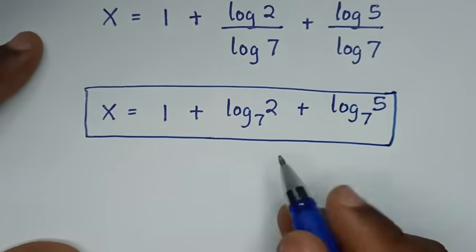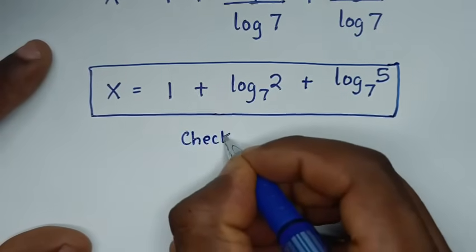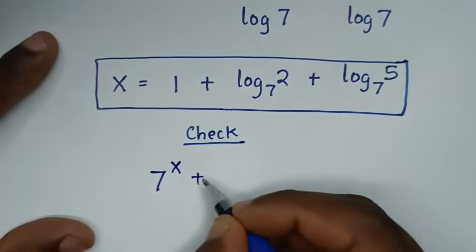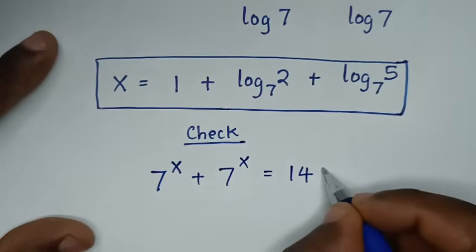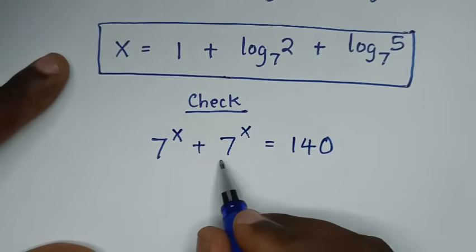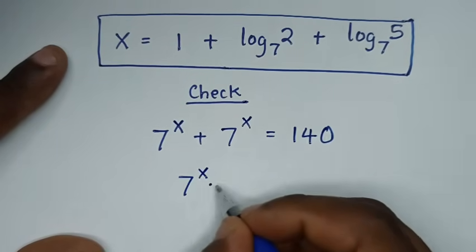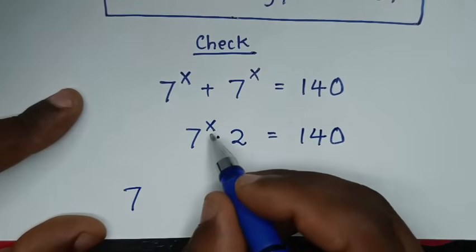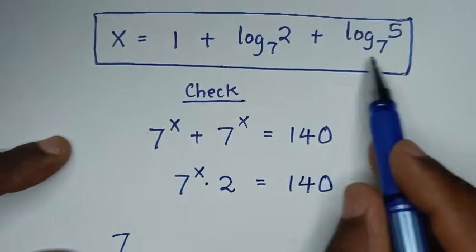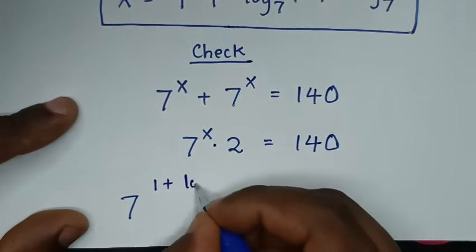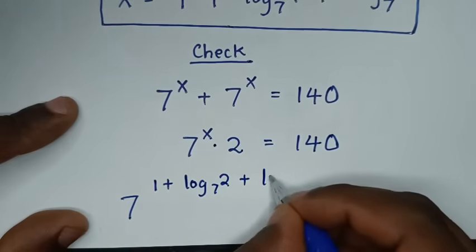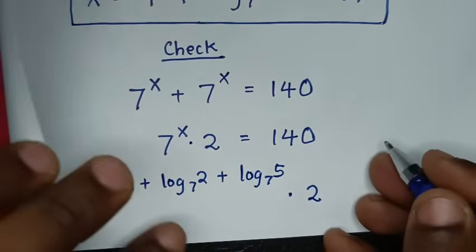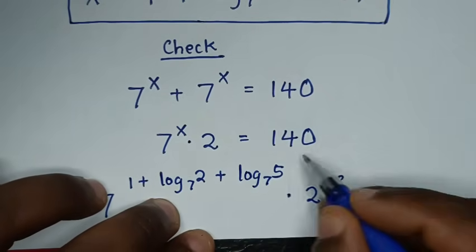Now in the next step, let's check this answer if it is correct. From our problem, 7 power of x plus 7 power of x equals 140. This is the same as 7 power of x times 2, which is equal to 140. We're checking with our answer, so it will be 7 to the power of 1 plus log base 7 of 2 plus log base 7 of 5, times 2. Is it equal to 140?